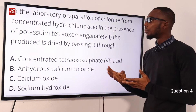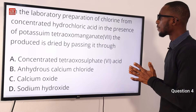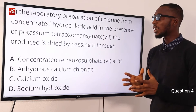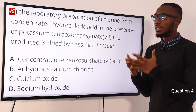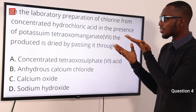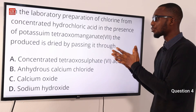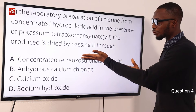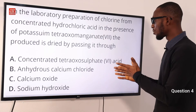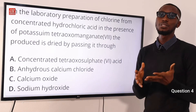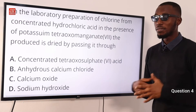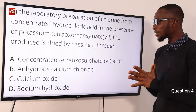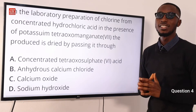Question 4. In the laboratory preparation of chlorine from concentrated hydrochloric acid in the presence of potassium permanganate, the product is dried by passing it through what? You have to let it pass through concentrated H2SO4, that is concentrated sulfuric acid. So the correct option is option A, by passing it through concentrated sulfuric acid.